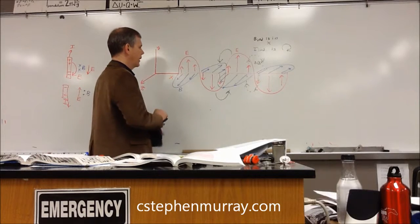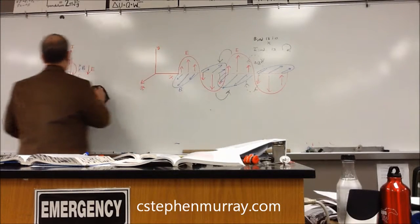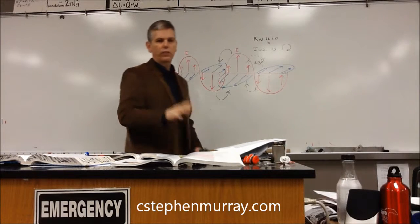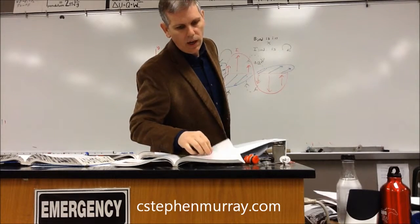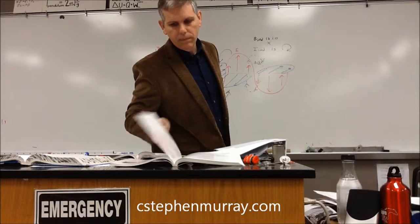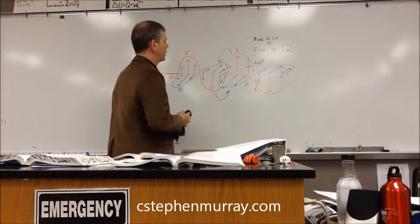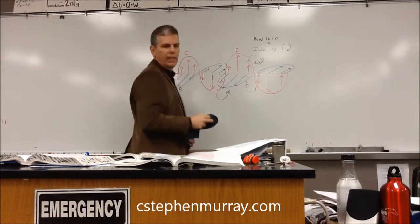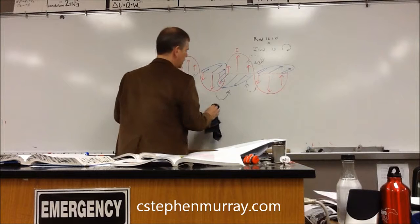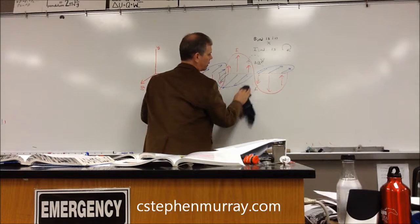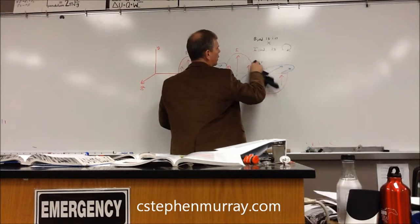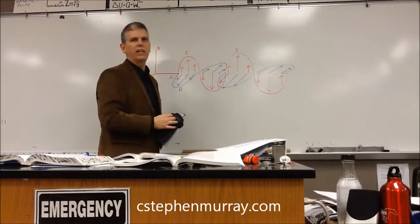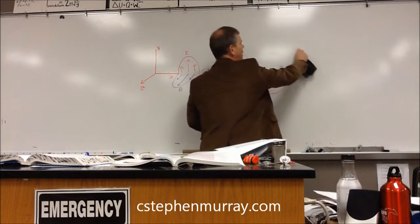Now let me clean up my diagram here a little bit. That makes sense how that works? And again, for those of us that have Knight, that's on page 1062. We have that a changing electric field causes a magnetic field, and a changing magnetic field causes an electric field, and in both of these cases we take a closed loop. That makes me feel good about why the EM wave will continue traveling through space.